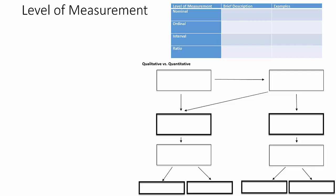The two graphics on the screen right now are directly from your notes. At the top of the screen, we see a chart with the different levels of measurement, a place for a brief description, and several examples. At the bottom of the screen, we see a flow chart, and we're actually going to start with the flow chart.